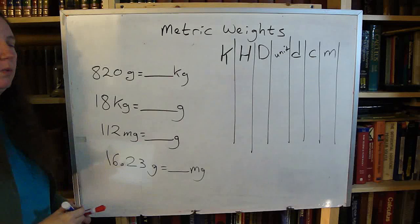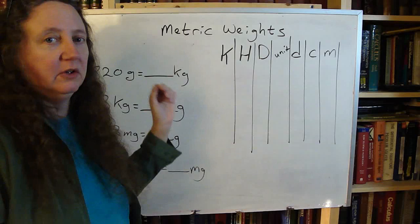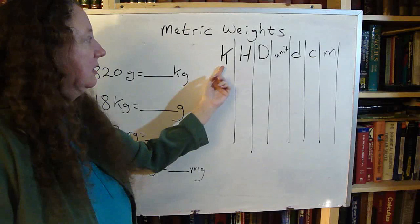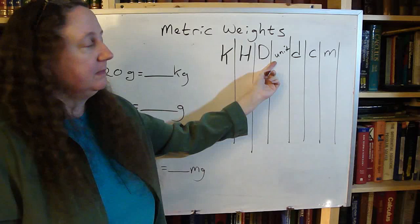Converting metric weights from one unit of weight to another. When you're dealing with the metric system, you need to know your prefixes for your metrics: Kilo, Hecto, Deca, whatever the unit may be - whether it's grams, liters, or meters (those are the three most common) - Deci, Centi, Milli.